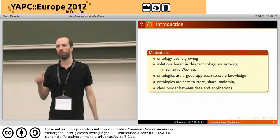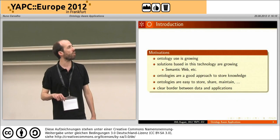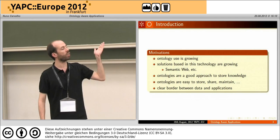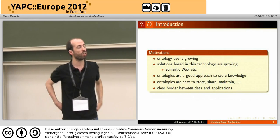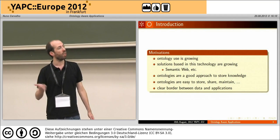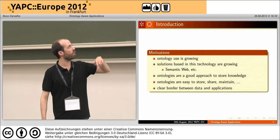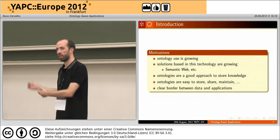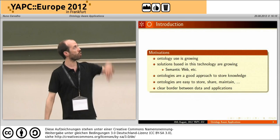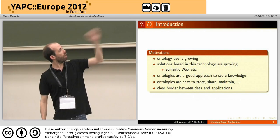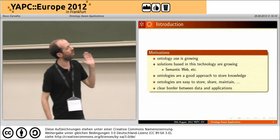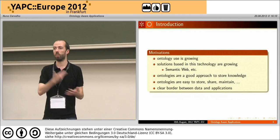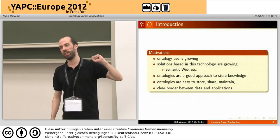Why use ontologies instead of plain files or relational databases? First of all, the use of ontologies is growing. The semantic web is a perfect example of this. Lots of applications, standards, and best practices around the web already define lots of stuff about ontologies and encourage people, in specific cases, to start using ontologies. Another thing: an ontology is easy to store and share, mainly because in most cases it's written in a plain text file, and it's also easy to maintain.